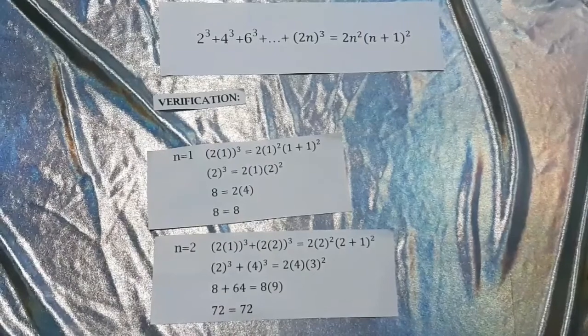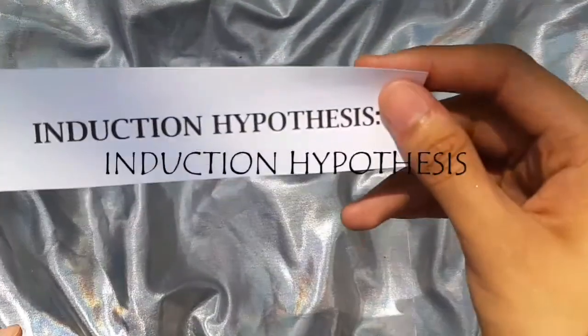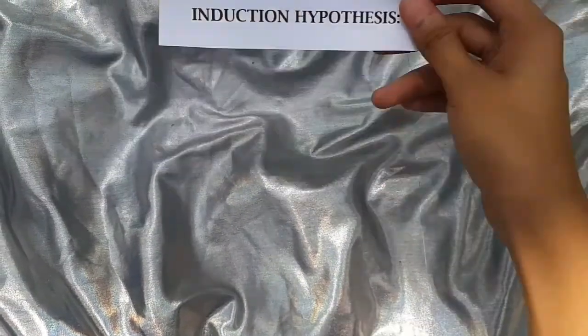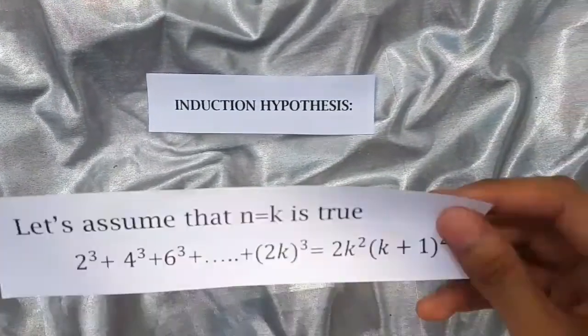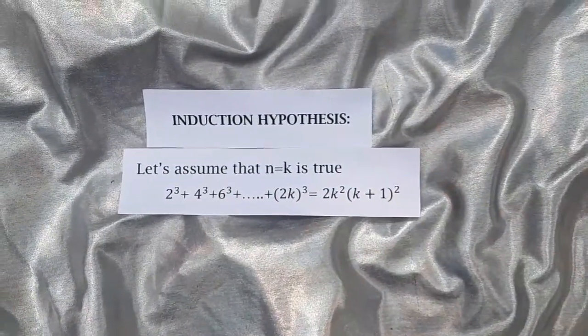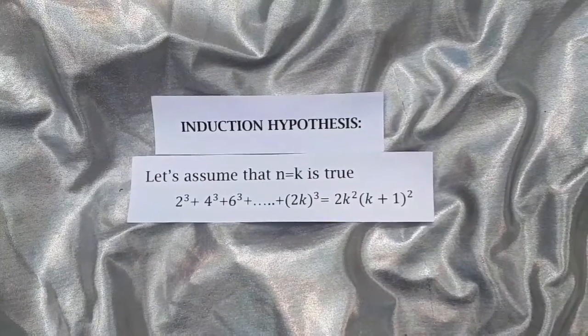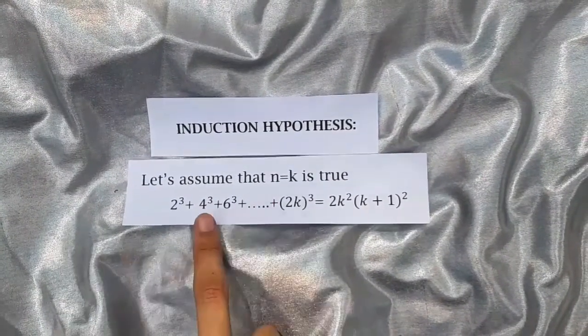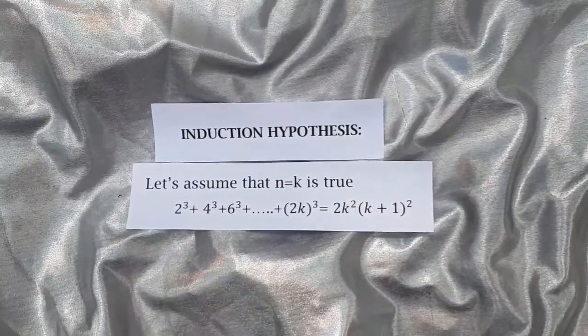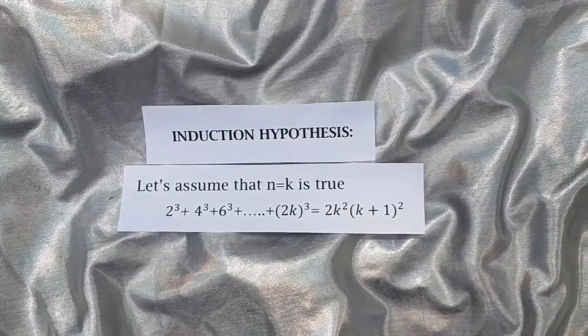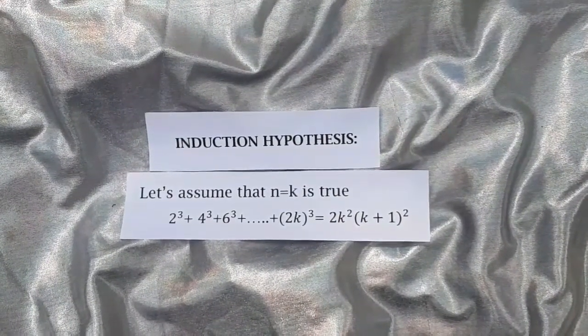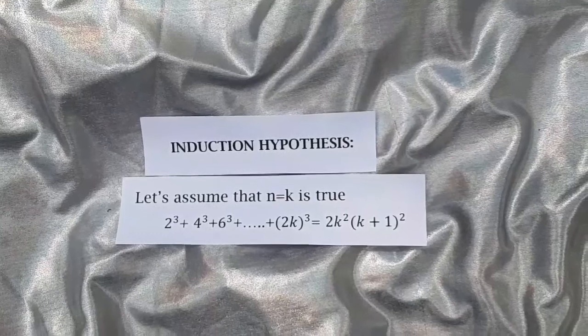For the induction hypothesis, let's assume that n equals k is true for 2³ + 4³ + 6³ + ... + (2k)³ = 2k²(k + 1)².